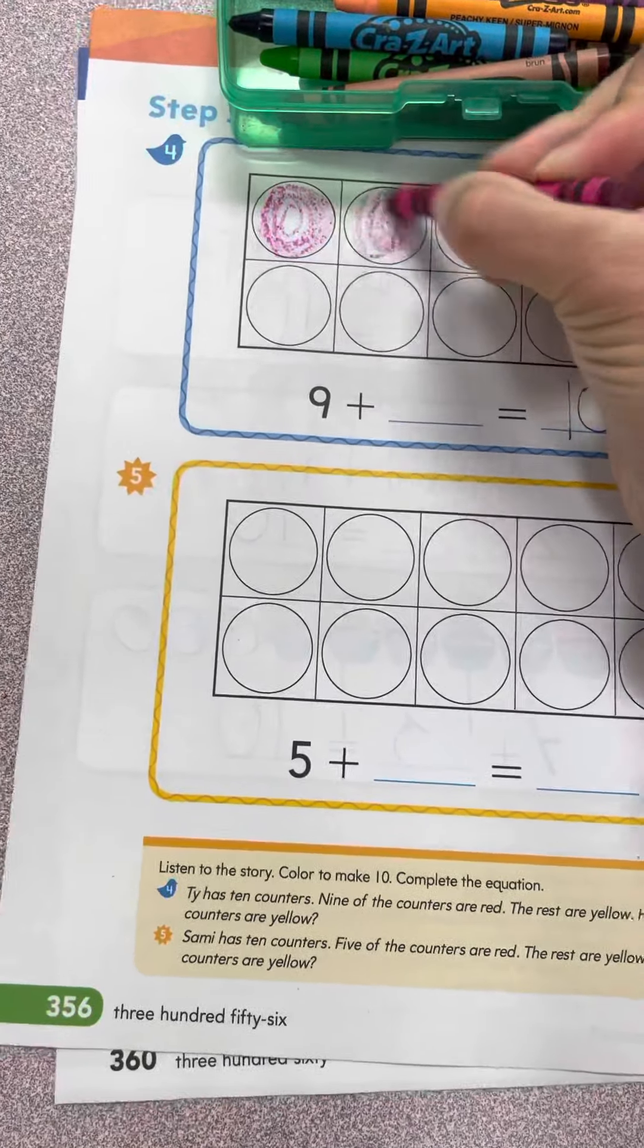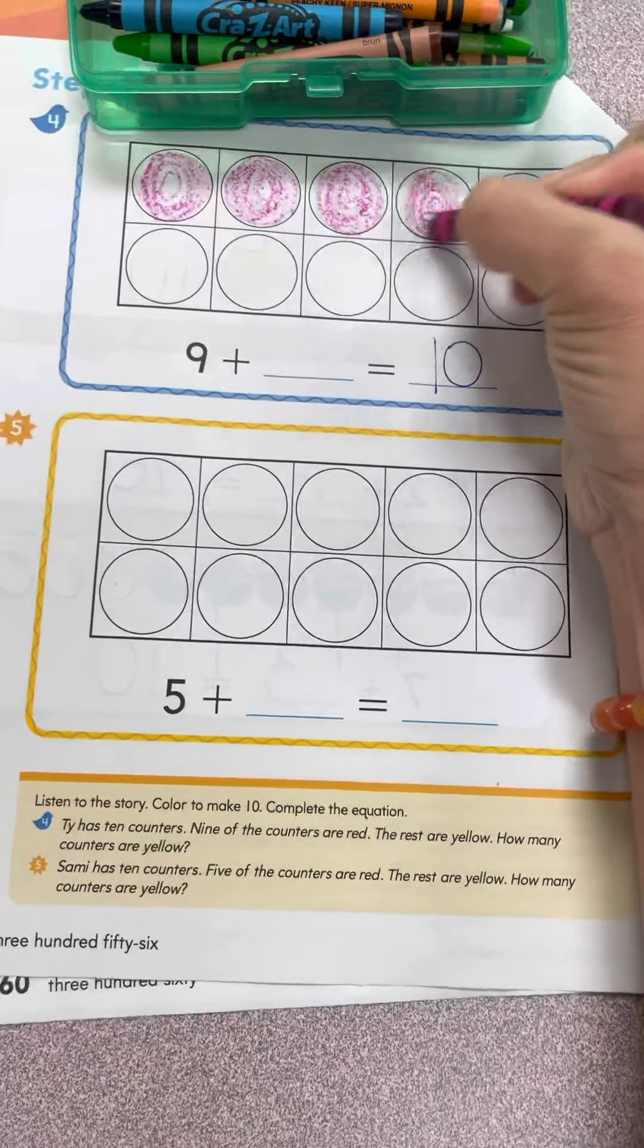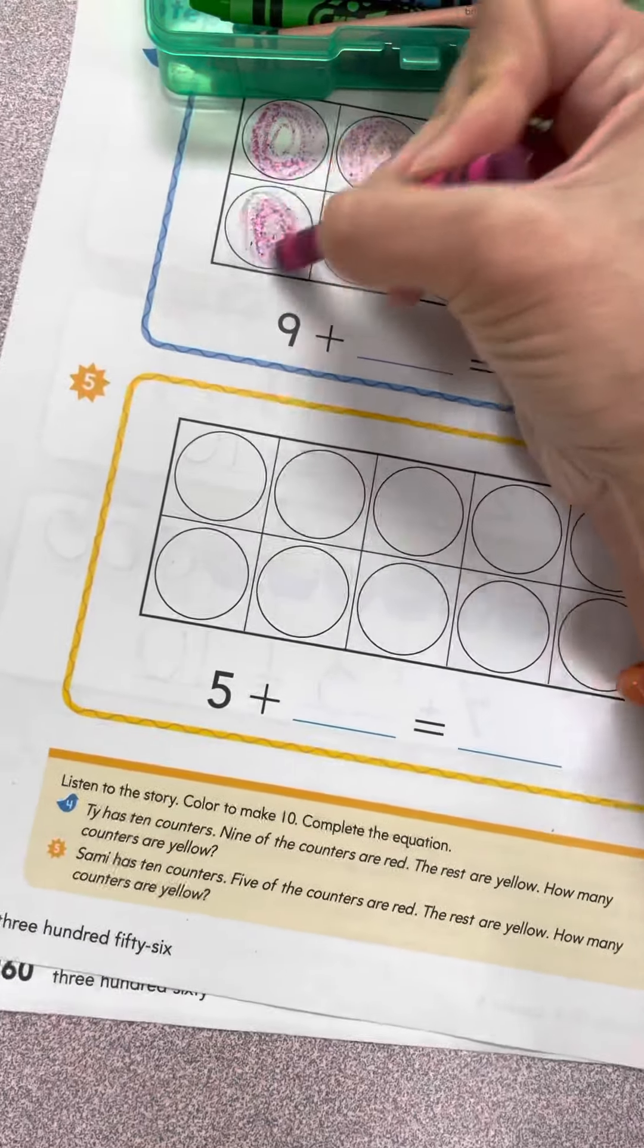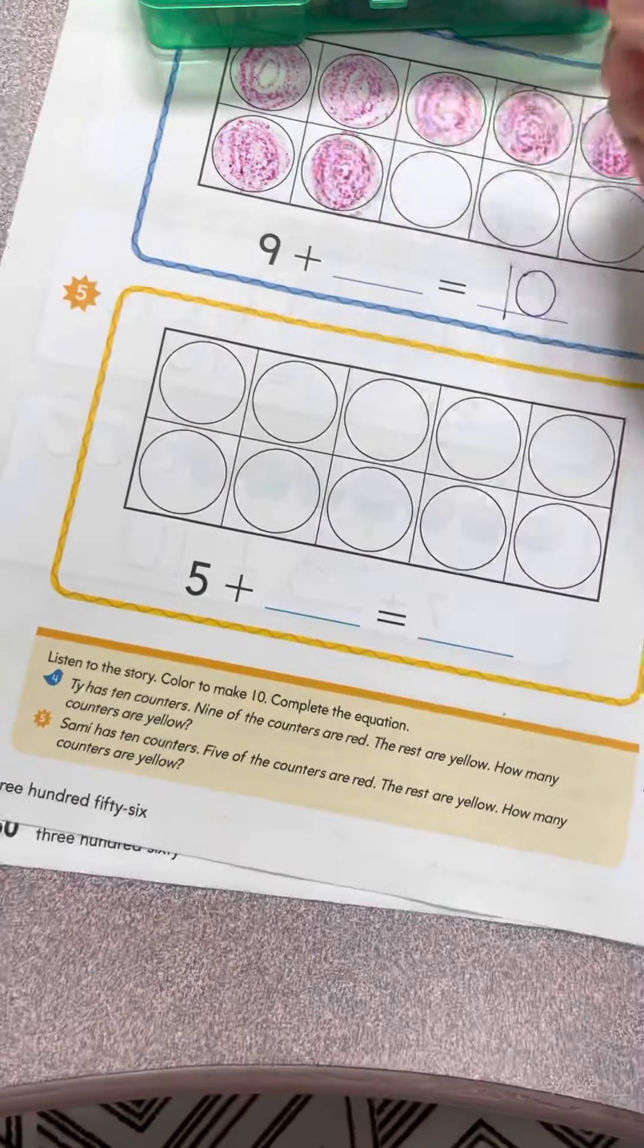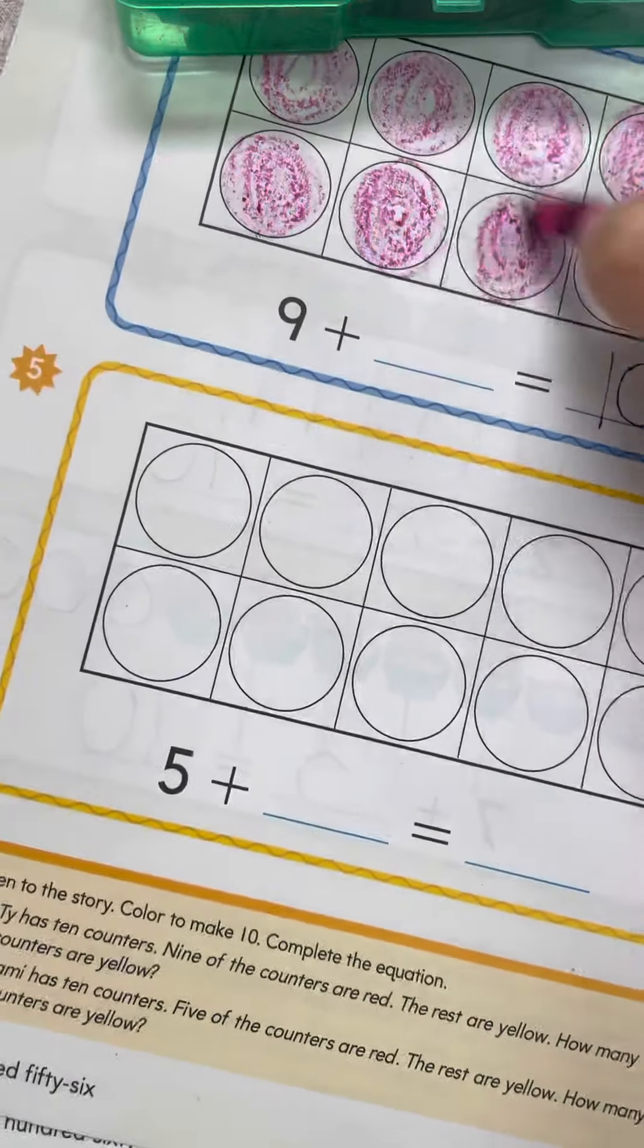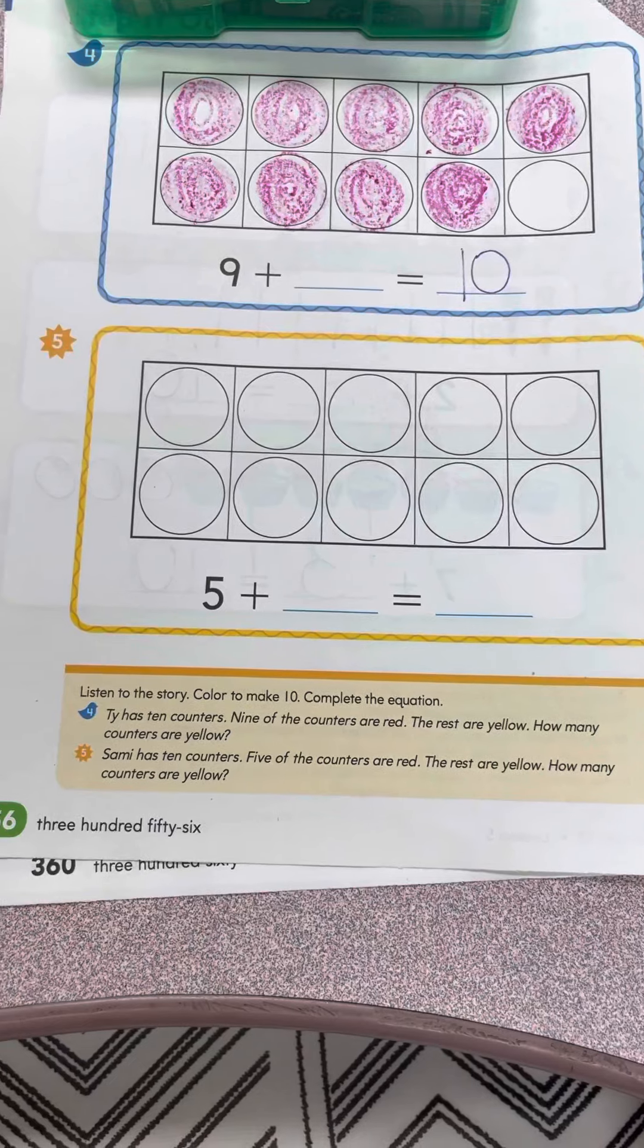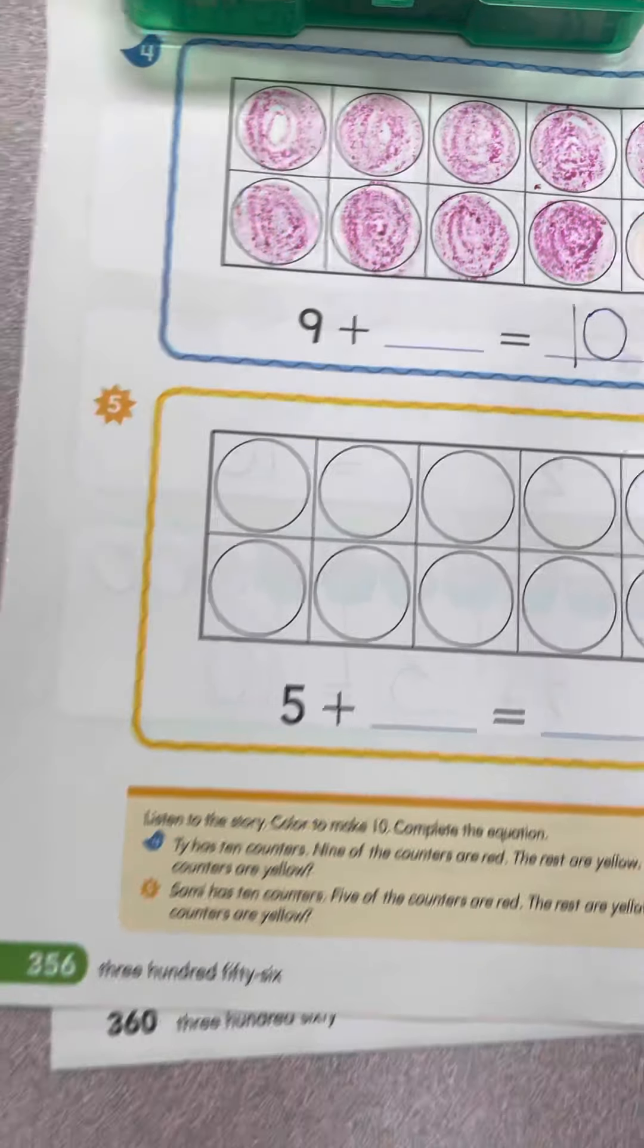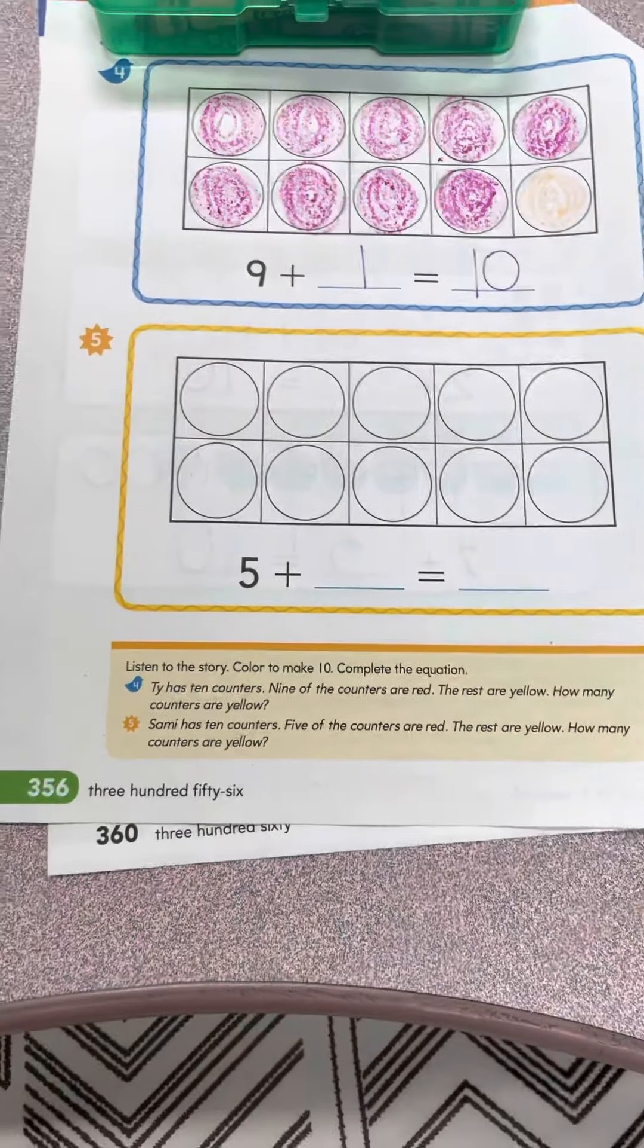So let's color them red: 1, 2, 3, 4, 5, 6, 7, 8, 9. There's the 9. How many counters are yellow? So let's color the rest yellow. How many are yellow? 1. 9 plus 1 equals 10.